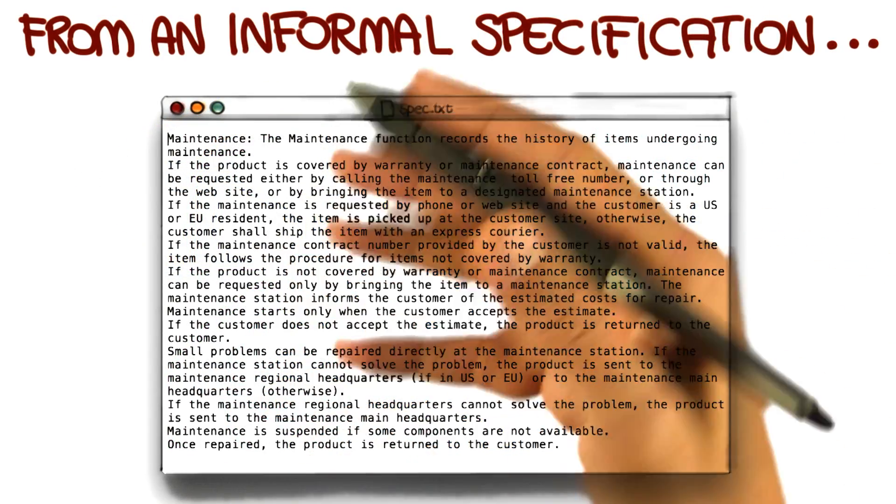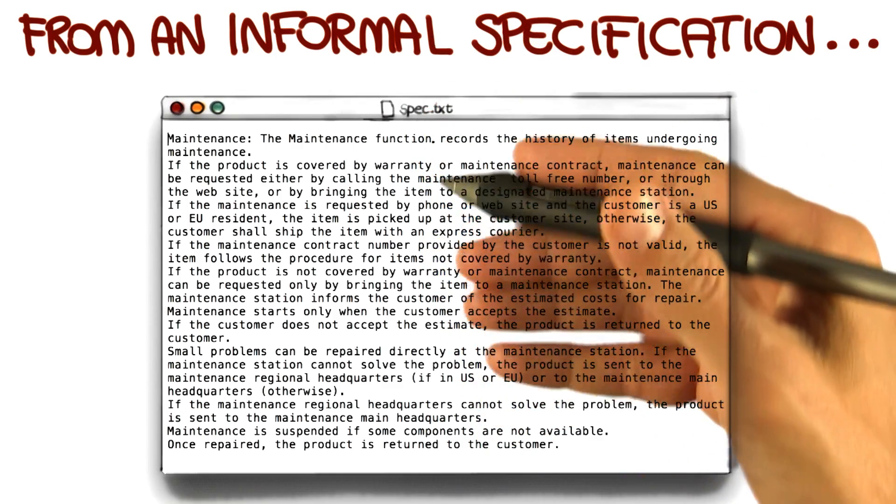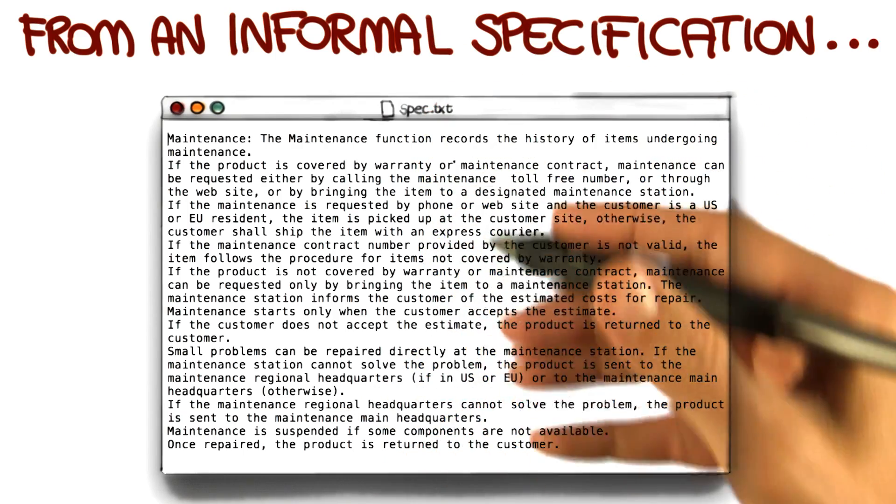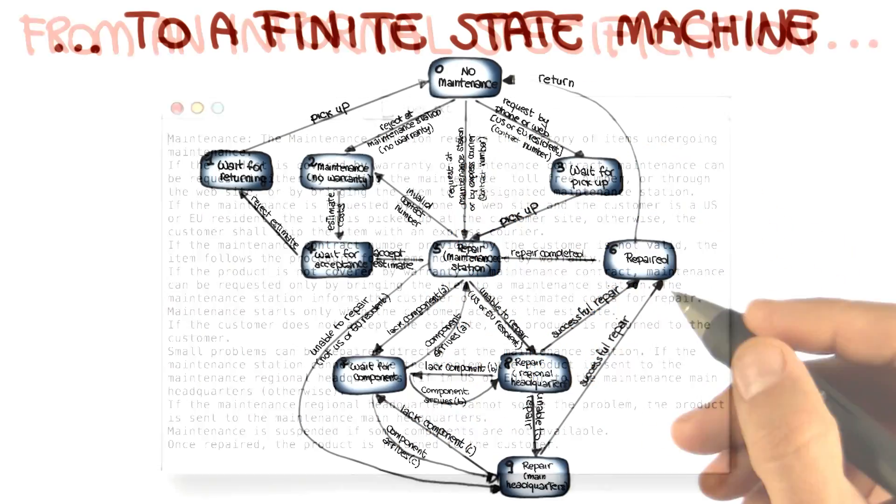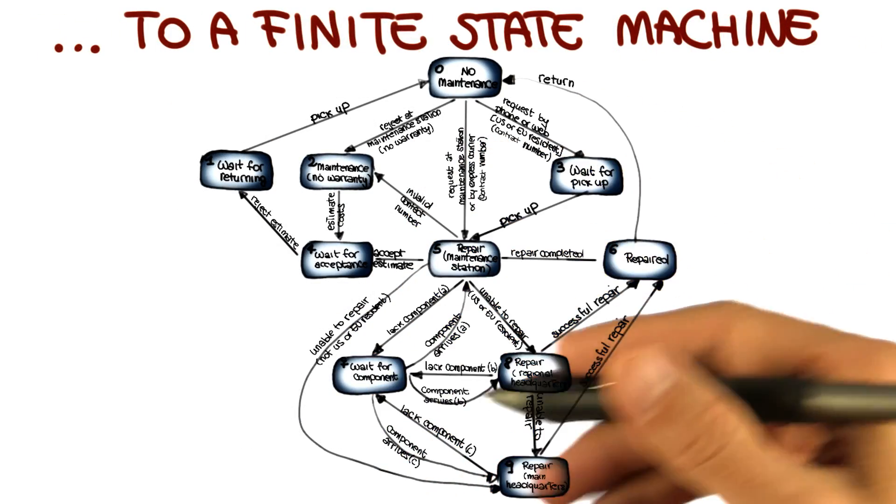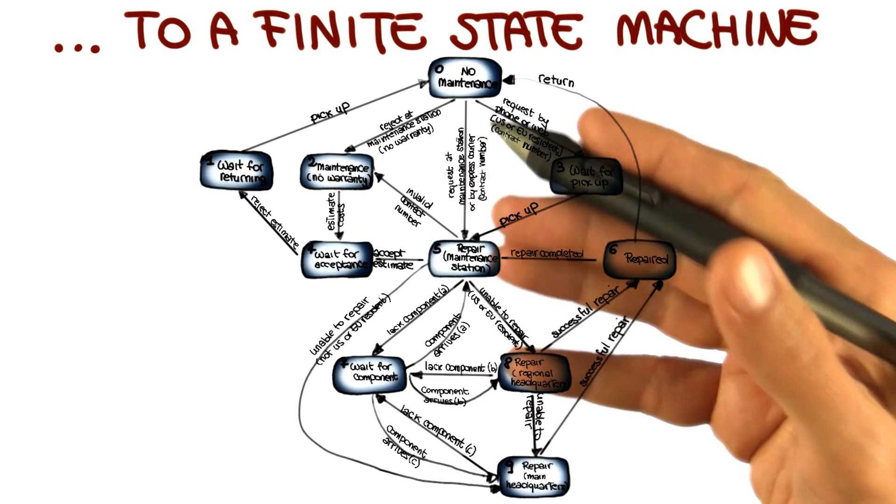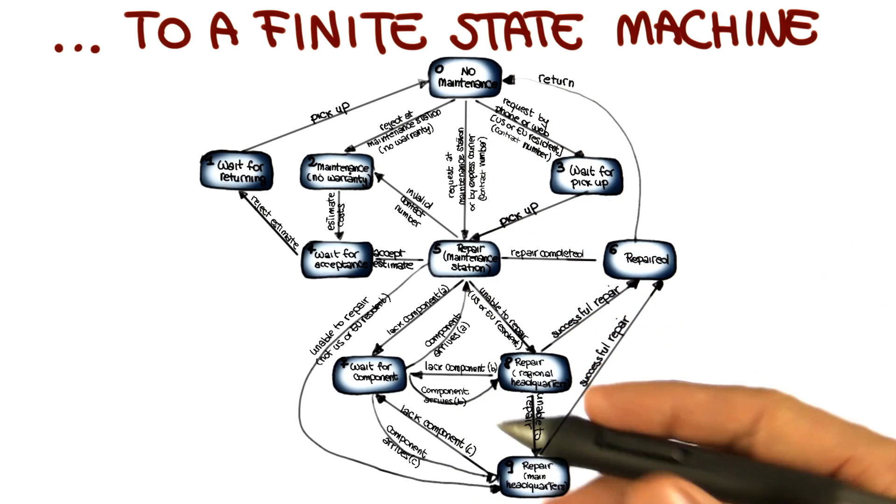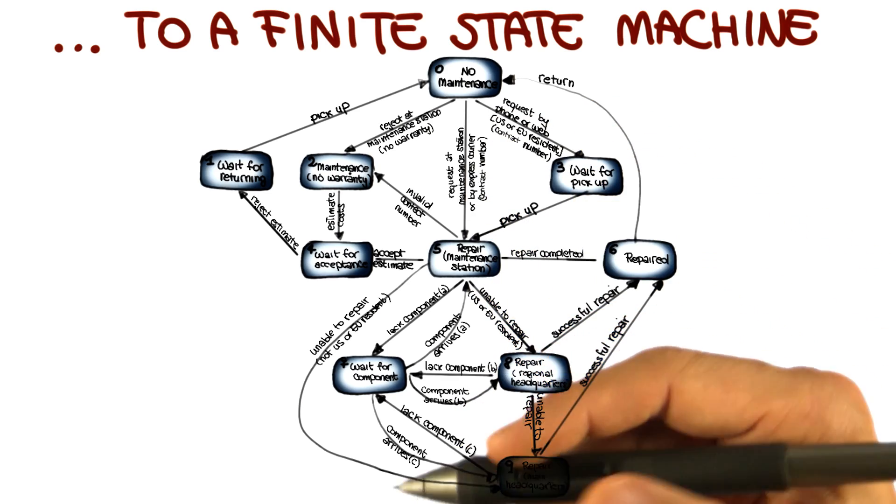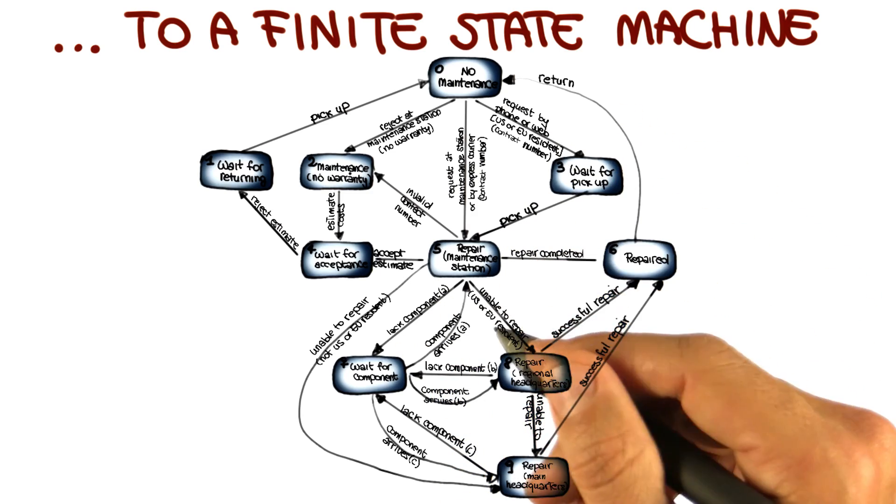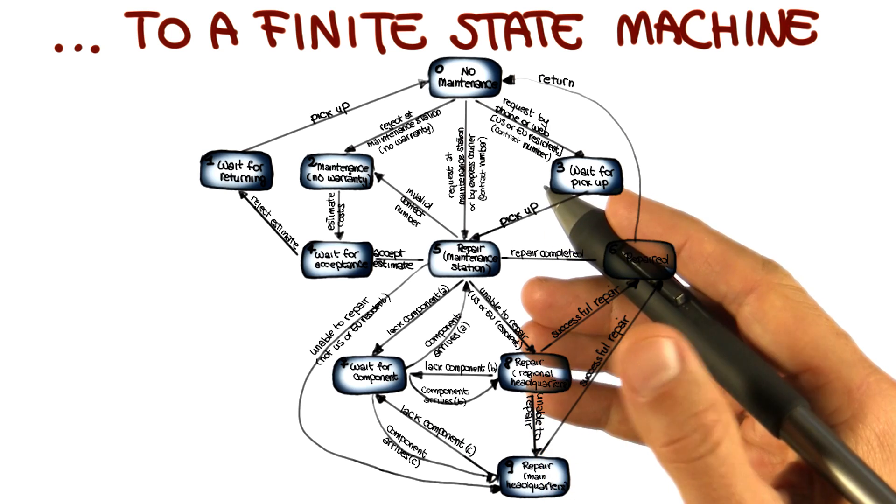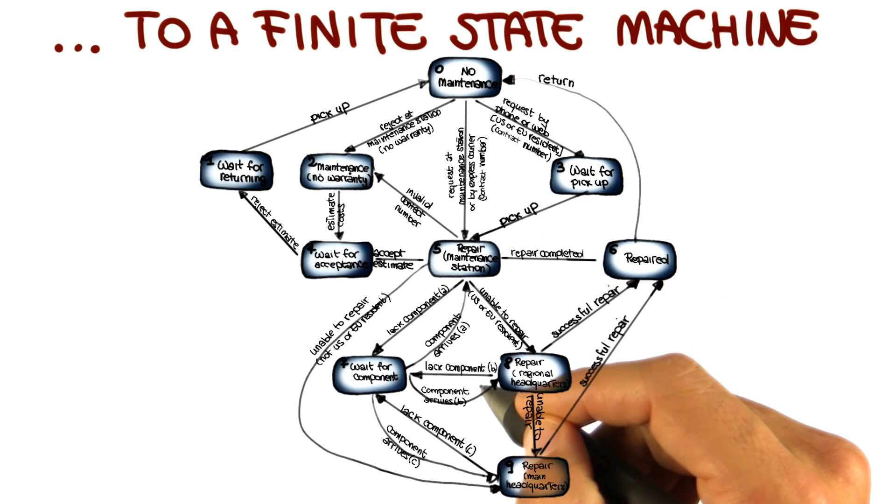So the bottom line here is that it is much harder to build a set of test cases that will cover the behavior of an informal description. But by going through a model, by building in this case a finite state machine for that description, we can in a much easier way see what the behaviors of interest of the system are and try to cover them. And that is again in the spirit of breaking down a complex problem into smaller steps that we can better manage, which in the end results in more efficient and effective testing.